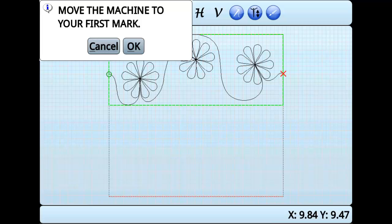Once the quilt has been rolled, move the machine to the left mark and press OK. Repeat for the right mark.